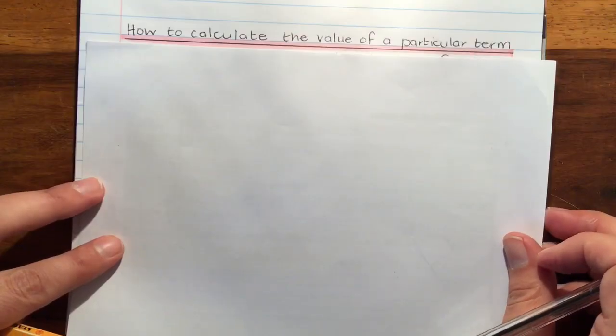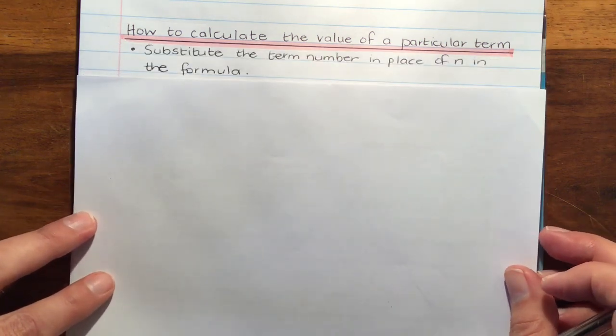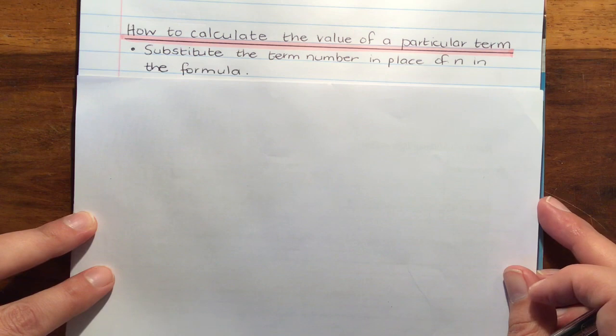How do we calculate the value of a particular term? We're going to substitute the term number in place of n in the formula.